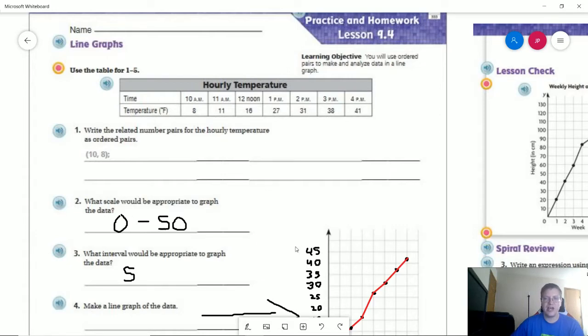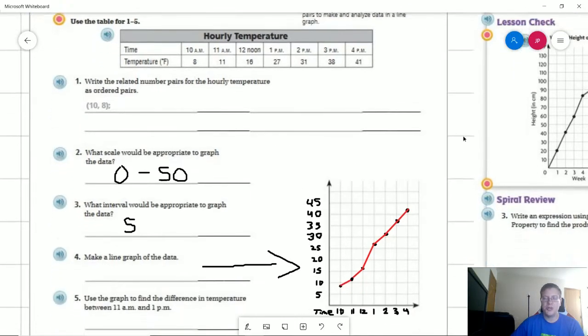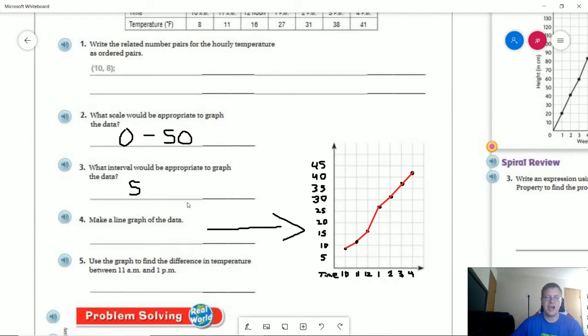We could go from zero to 50. I chose to only go to 45 for this. If we were answering number three, which you'd probably want to think about to make your graph as well, we could probably count by fives each time that we have a new line going vertically.